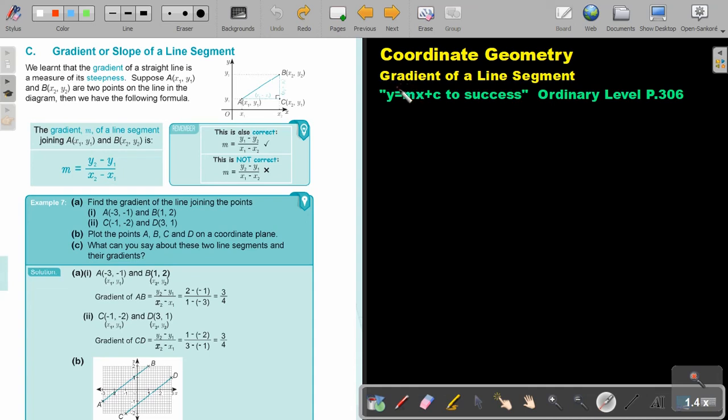In this video we are going to focus on the gradient of a line segment. You will find this on page 306 in the Namibia Ordinary Level Mathematics textbook y equals mx plus c to success.